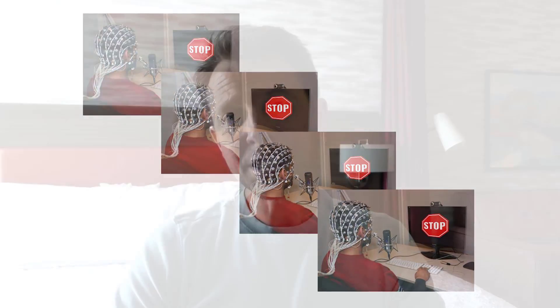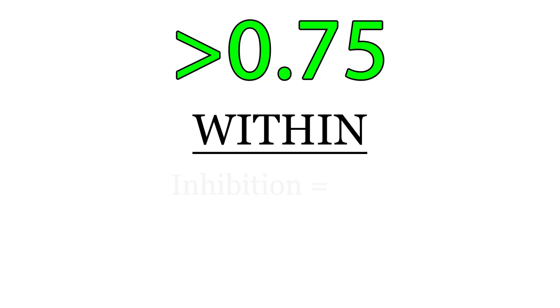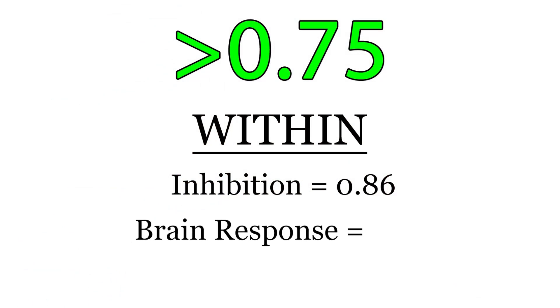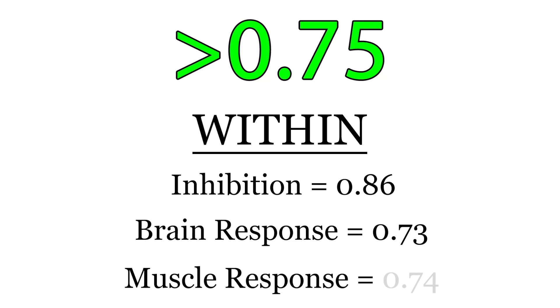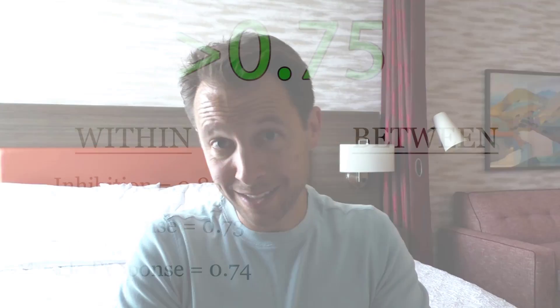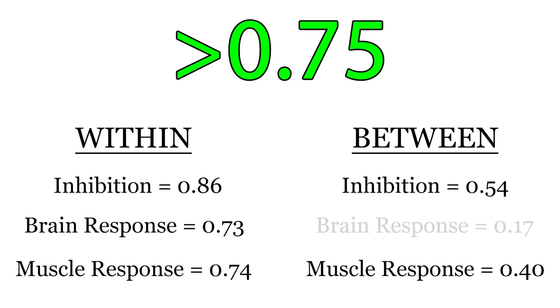What did they find? They ran correlations, and any correlation above 0.75 is considered stable — that's our marker to determine whether something is an absolute trait. Within each individual session, inhibition appeared very stable at about 0.86. They also looked at physiological markers of inhibition — things expected to happen in the brain or muscles while inhibiting a response. Within session, brain response was stable at 0.73 and muscular response at 0.74. But between testing sessions, inhibition dropped to 0.54, muscle measures dropped to 0.4, and brain measures dropped to 0.17. Reliability is basically gone.